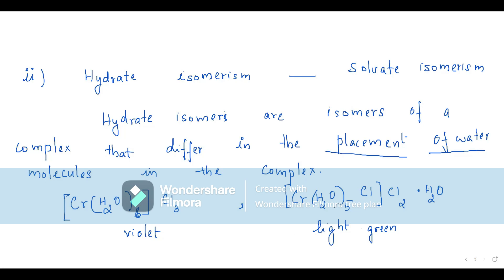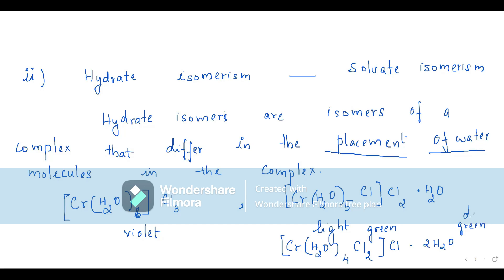One more example: send one more H₂O outside, so it becomes [Cr(H₂O)₄], and bring in one more Cl as a ligand. One Cl remains as counter ion, and this is a dihydrate, with a dark green color. So the meaning of hydrate isomerism is clear. The key point to note: it is 'hydrate,' not 'hydration.'